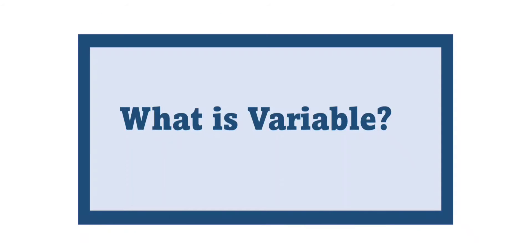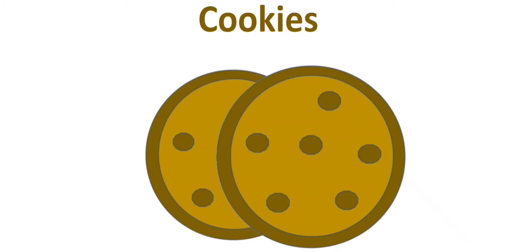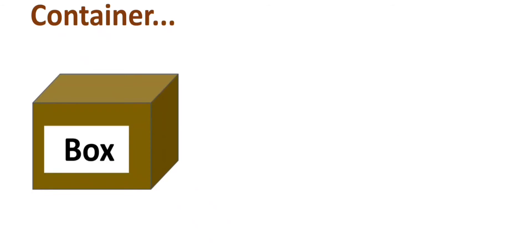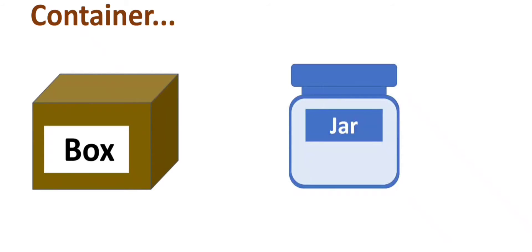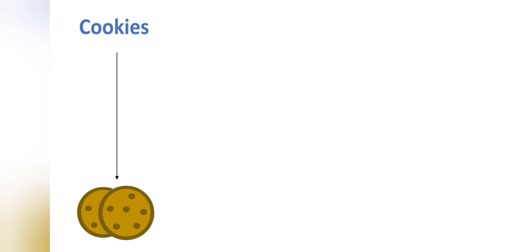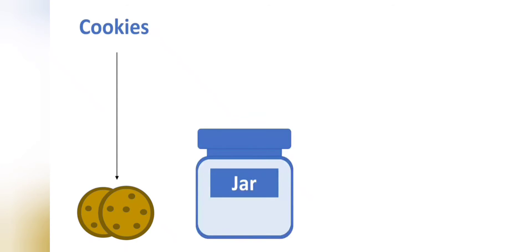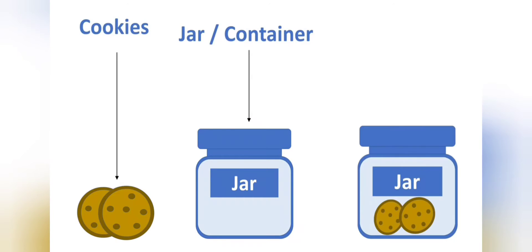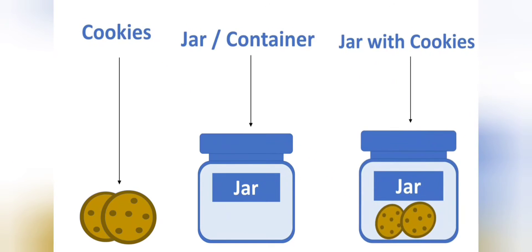Let's begin. First we are going to discuss about what is a variable. Imagine if you have cookies and you want to store them — for that you need a container, like a box or a jar. Here I have taken a jar to store the cookies, so the jar works as a container to store the cookies.